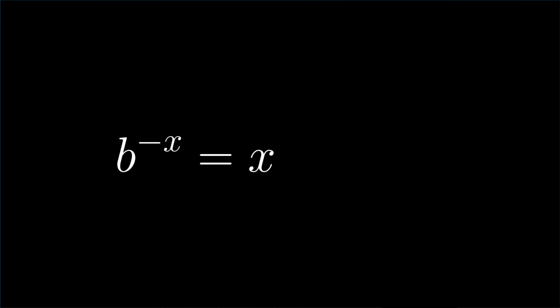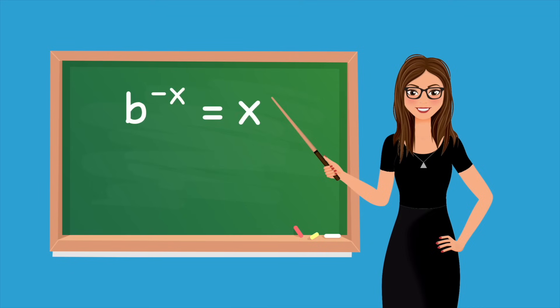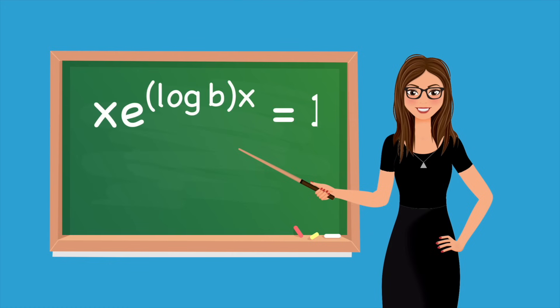It turns out that the fixed point for negative exponentials and the Lambert W function are closely related. The equation b to the minus x equals x can be rewritten as x times b to the x, which can in turn be rewritten as x times e to the log bx. Multiply both sides by log b.